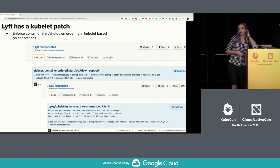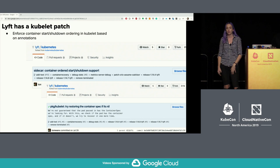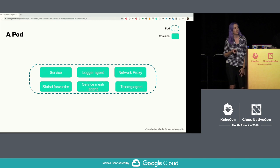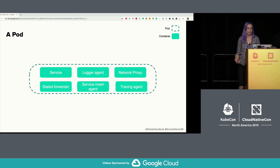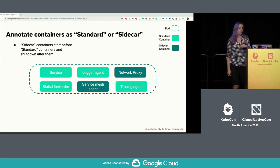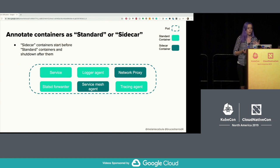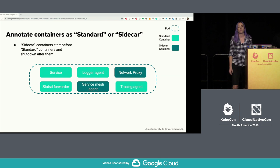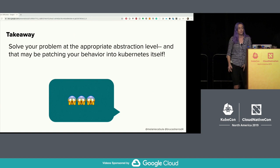It turns out Lyft had the same problem and had their patch in their open-source Kubernetes fork. Their patch is in Kubelet: if you annotate containers as 'standard' or 'sidecar,' Kubelet enforces that sidecar containers start before the standard container and shut down after them — which is exactly the behavior we want. We also used this for service discovery containers. The takeaway: solve your problem at the appropriate abstraction level, and that may even mean patching behavior into Kubernetes itself.